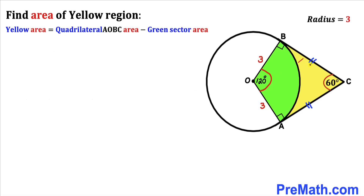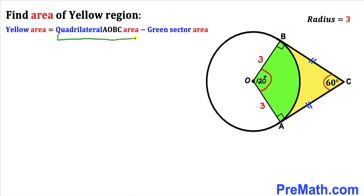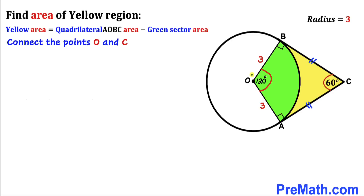Since we are calculating the area of the yellow shaded region, we can see that it equals the area of quadrilateral OABC minus the area of the green sector. Our task is now to calculate both the area of quadrilateral AOBC and the area of the green sector.